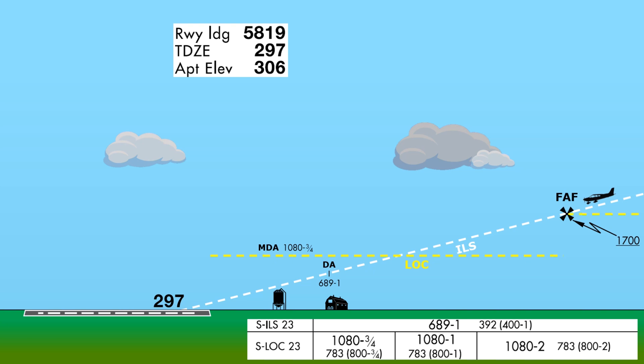Most approaches with these close-in obstacles will push precision and non-precision minimums up enough that the precision numbers will still be lower. But in some special cases, like here at Frederick, the obstruction will be in just the right place, at just the right height, to make the non-precision minimums lower, and this is why.